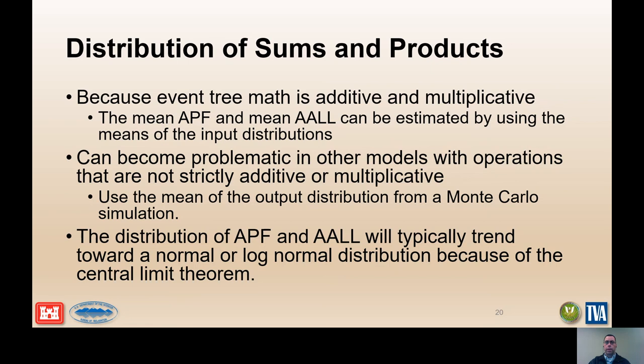In probability theory, the central limit theorem states that, given certain conditions, the arithmetic mean of a sufficiently large number of iterates of independent random variables, each with a well-defined expected value and well-defined variance, will be approximately normally distributed, regardless of the underlying distribution.